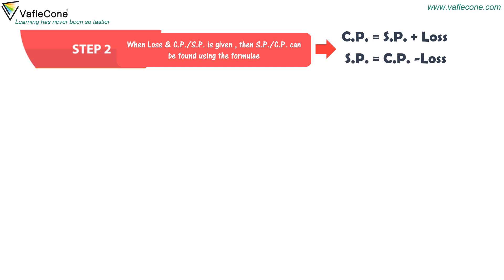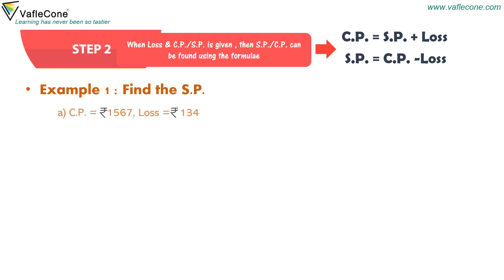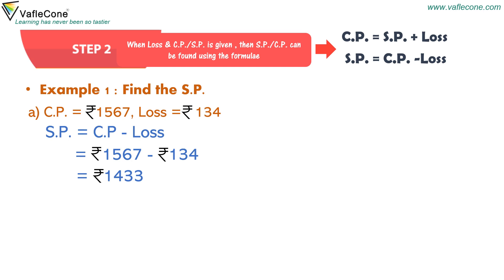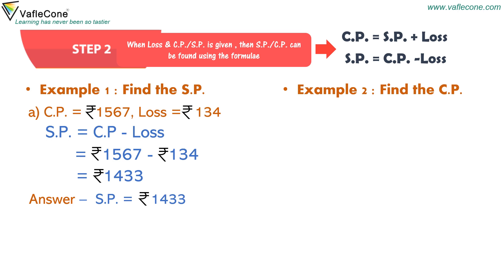Example: find the selling price. Cost price equals rupees 1567, loss equals rupees 134. Selling price equals cost price minus loss, so rupees 1567 minus rupees 134 equals rupees 1433. So selling price is rupees 1433.